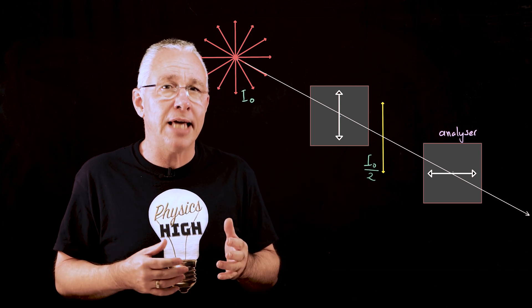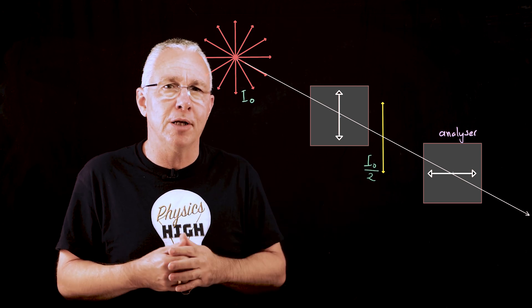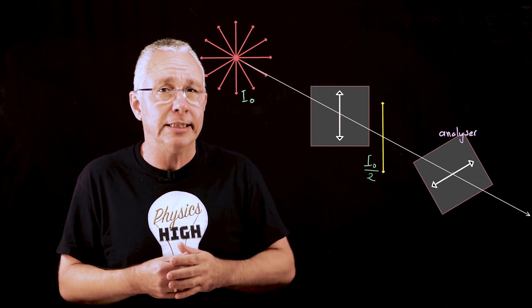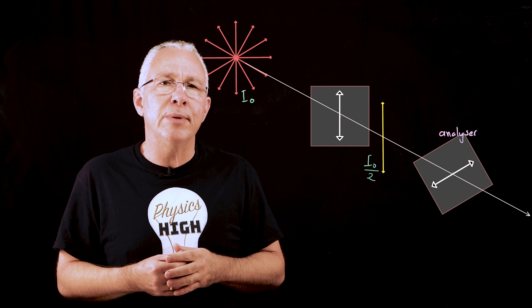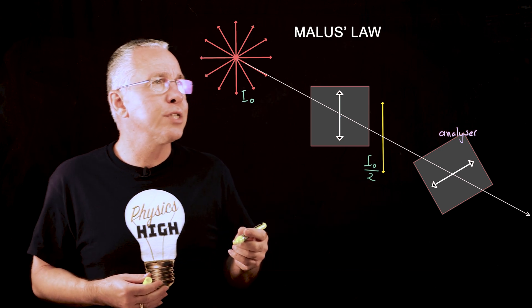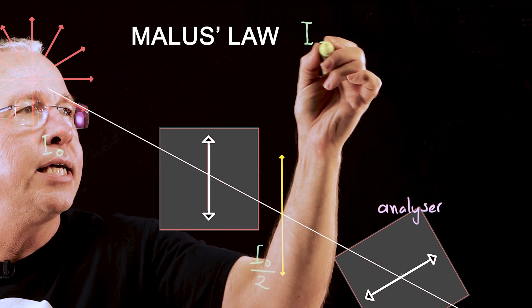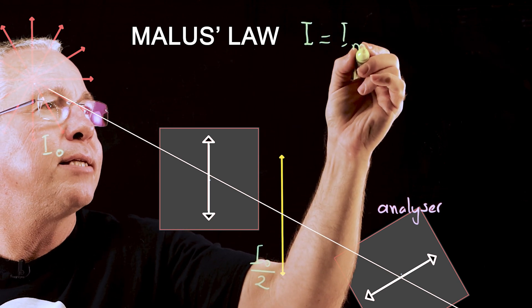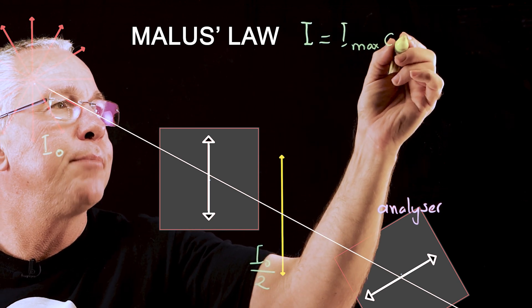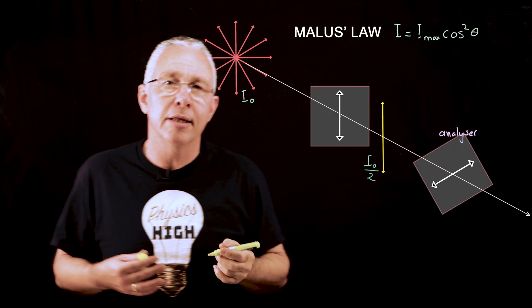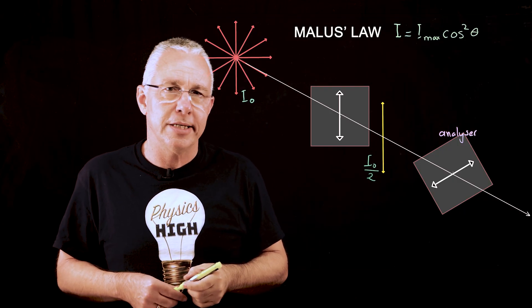So what happens if the angle between the first polarizer and the analyzer is somewhere in between 0 and 90 degrees? This is where we can use Malus's law and Malus's law states that the intensity coming out is equal to the maximum intensity entering multiplied by the cosine squared of the angle between the two axis of polarization.